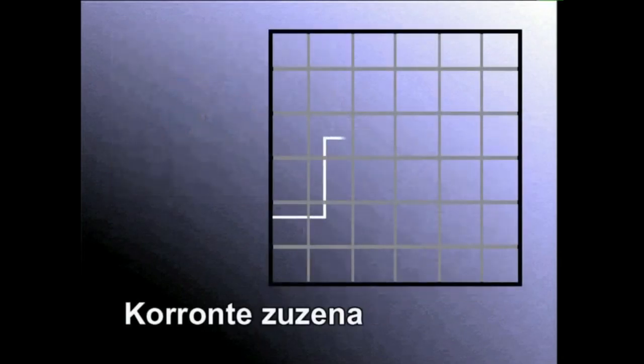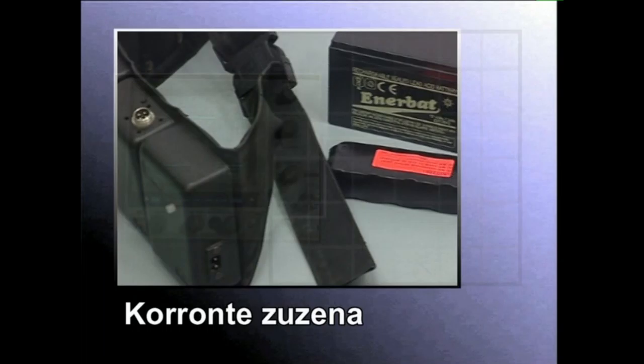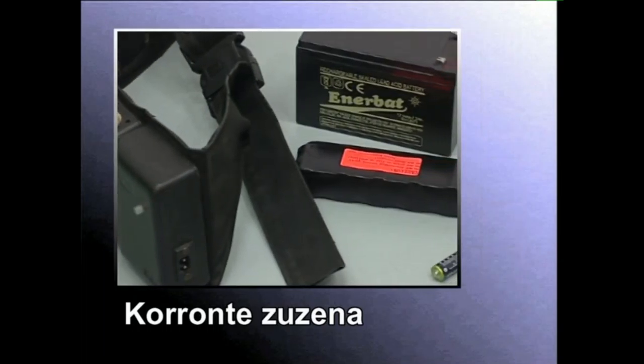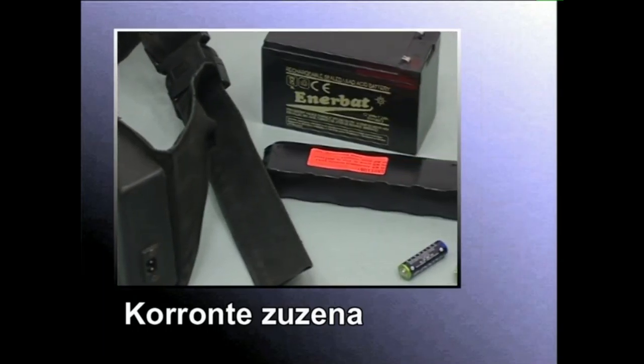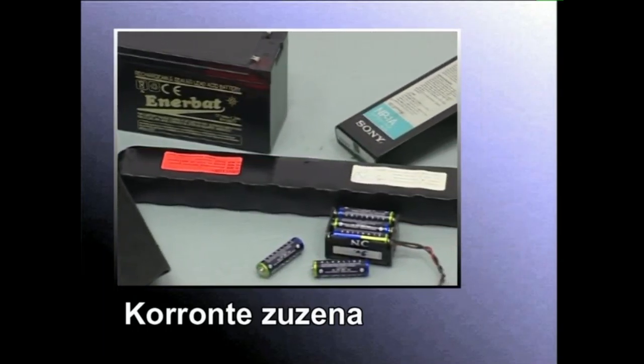Korronte zuzena, noranzkoz aldatzen ez den korronte elektrikoa da. Korronte zuzenaren ezaugarriak ere osziloskopio baten bitartez ikus daitezke. Pilek, bateriek eta korronte zuzeneko elikagailuek ematen dute korronte zuzena.